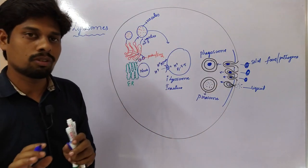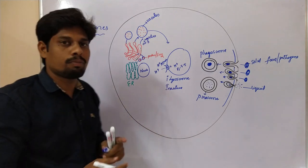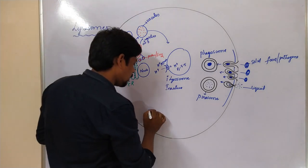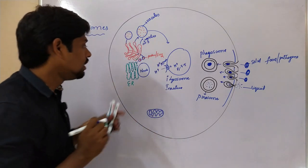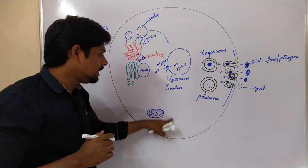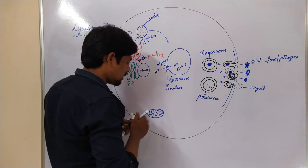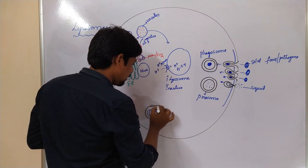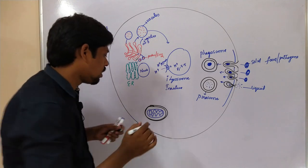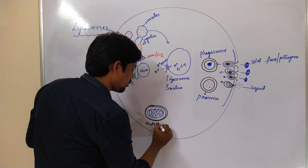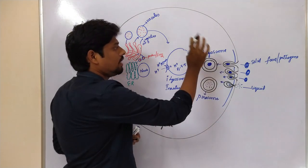We got phagosomes. Then what is an autophagosome? If a cell gets ruptured, the ruptured cell contains organelles like mitochondria. Such ruptured mitochondria must be digested. These mitochondria get surrounded by membrane-like double membrane structures, forming vesicles — such vesicles we call autophagosomes. So we now have autophagosomes, pinosomes, and phagosomes.